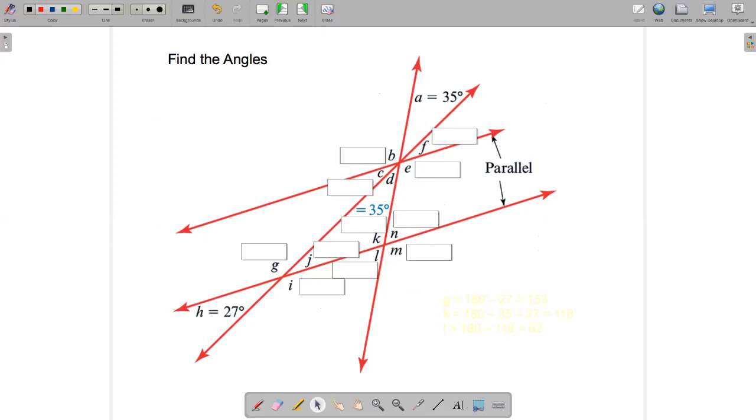And then, let's look at this angle down here. 27 degrees. The opposite angle is j. That must be 27 degrees as well. Sure enough it is.